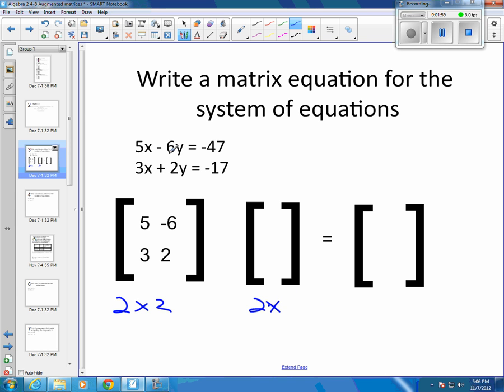Well, I have my 5 and my 3 and my 6, negative 6 and 2 accounted for. I don't have the x's and y's accounted for. So if I actually put my x here and my y here and I'm multiplying, that would mean my x gets multiplied by my 5 and my y gets multiplied by my negative 6, which would put me back to this 5x minus 6y. And then you take the x times the 3 and the y times the 2, which would get me back to this 3x plus 2y.